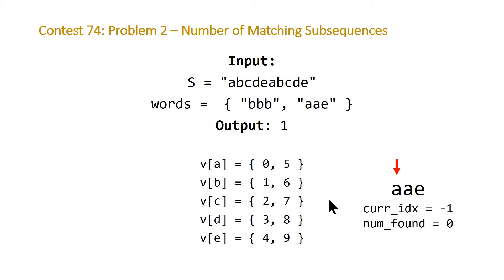So for this one, AAE, we're going to start with our current index equal to negative one again, and we're looking for the A. We're going to look in this vector, it's going to find the zero. We're going to move to the next A, and then we're going to find the five. And then we're going to move to E, and we're going to find the nine. So because we were able to get to the end of our word, we know that we have found one word. And so we'll update numFound to one. So let's take a look at our code.